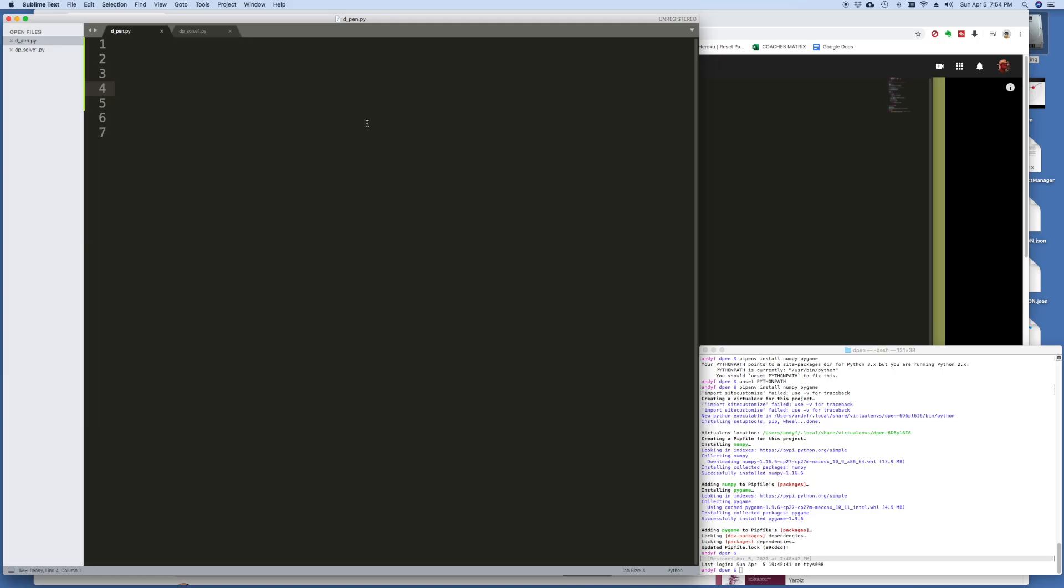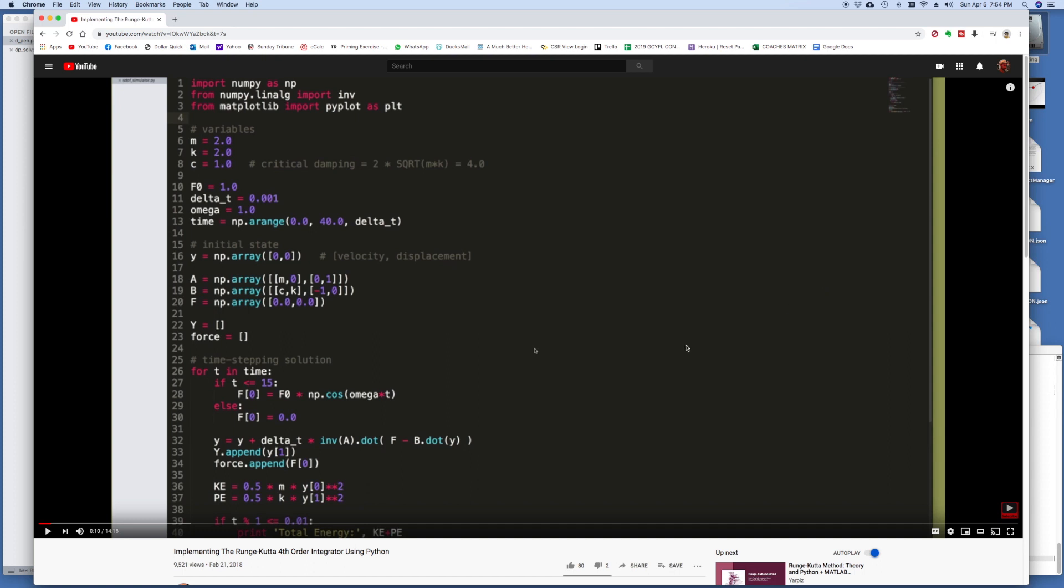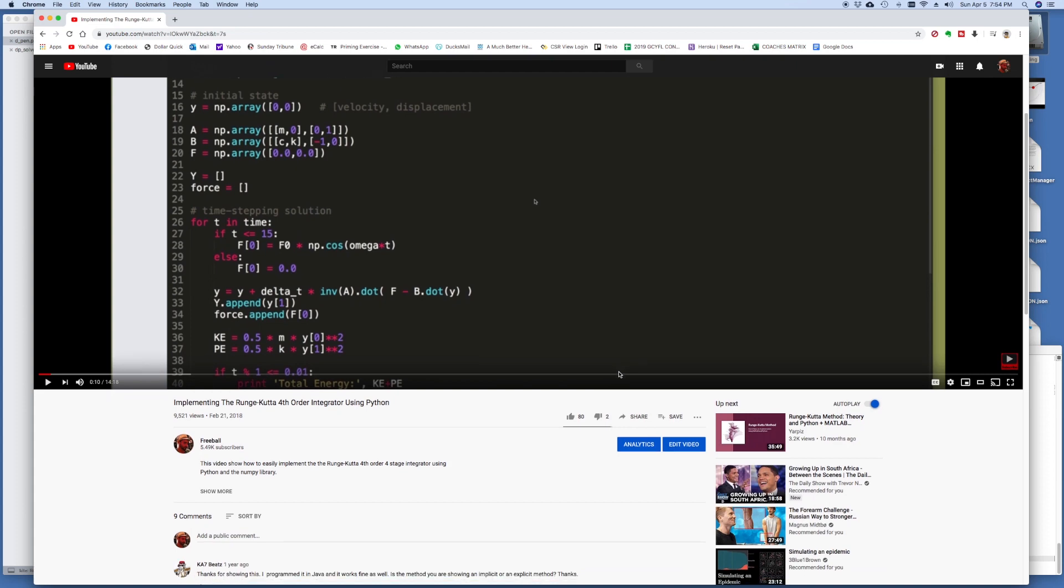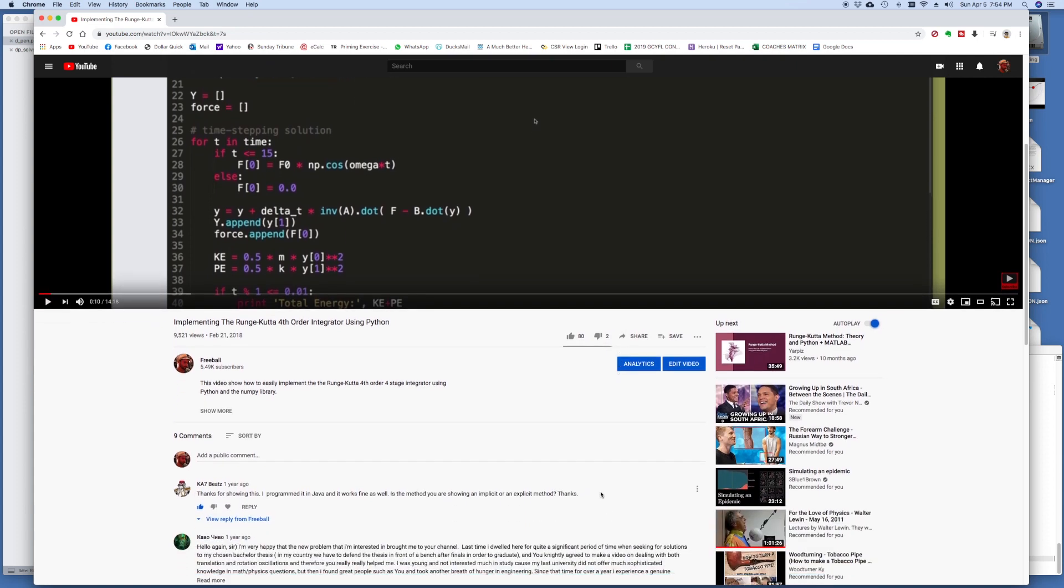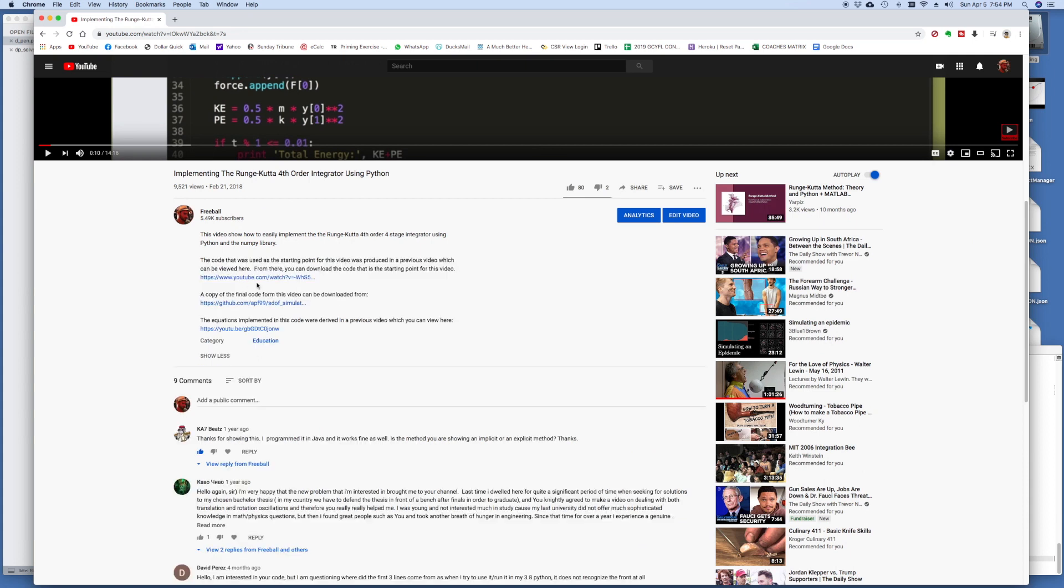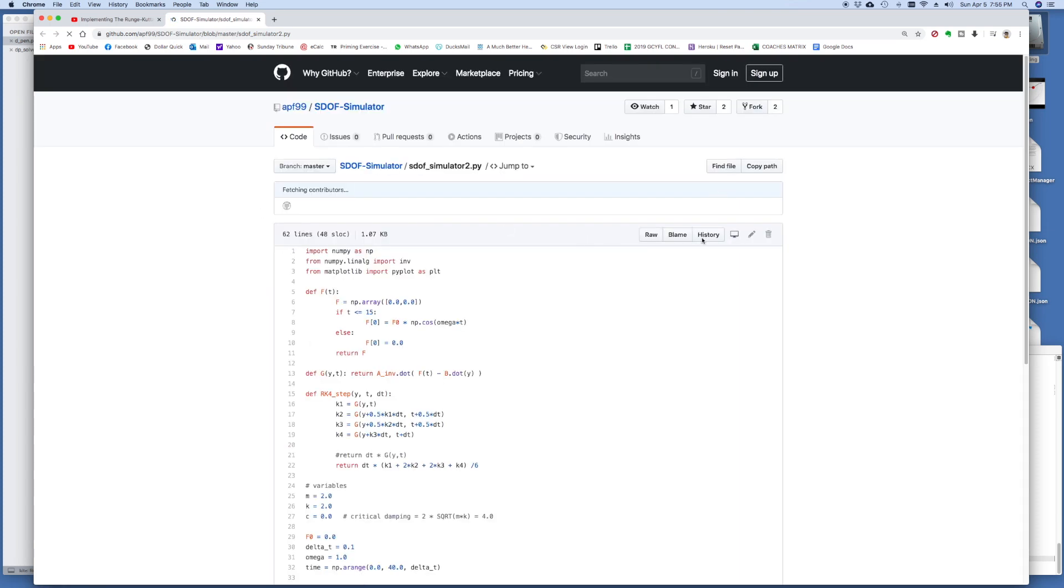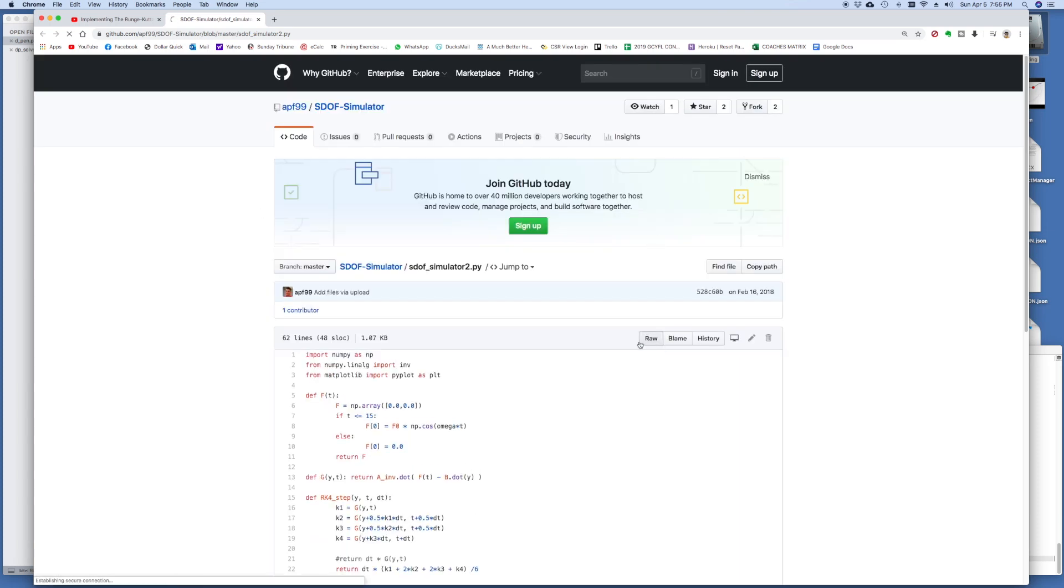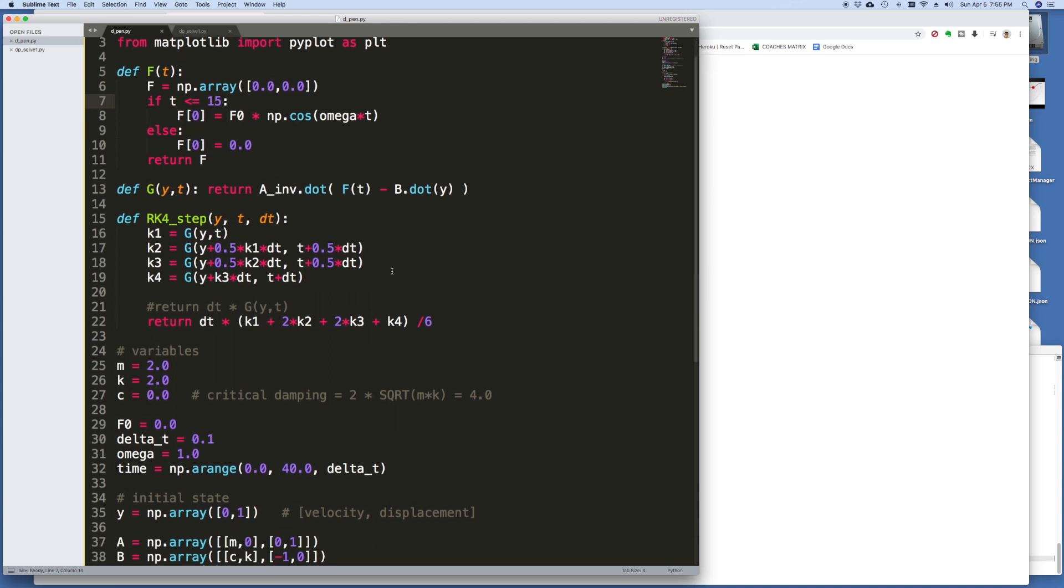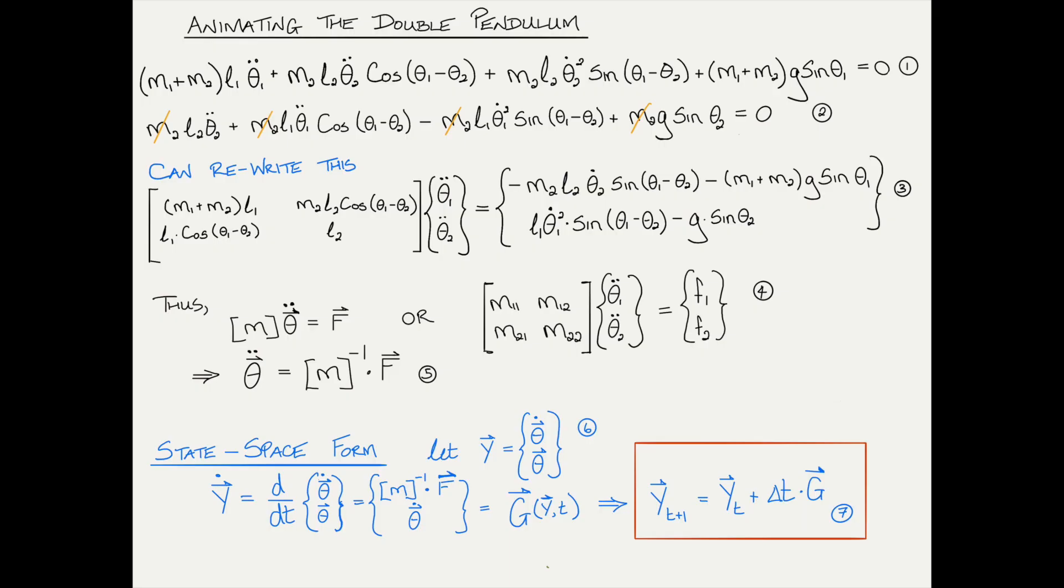Okay, so to solve this problem of the double pendulum, I'm just going to reuse the code that we used for the single pendulum in this video implementing the Runge-Kutta fourth-order integrator using Python. If you just go to the comments here in the GitHub repository, then this is the code. Let's just get the raw version of that.